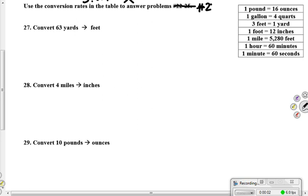Should say numbers 27 through 30. Okay, here we go. We're doing 27 through 30. We're going to use this chart over here on the right. They tell us how many ounces are in a pound, how many quarts are in a gallon, how many feet are in a yard, and so on. So which one are we trying to do first?